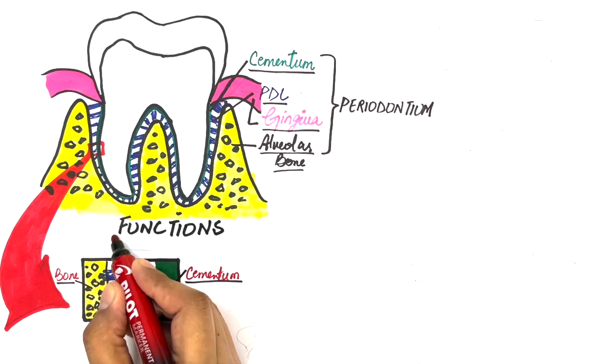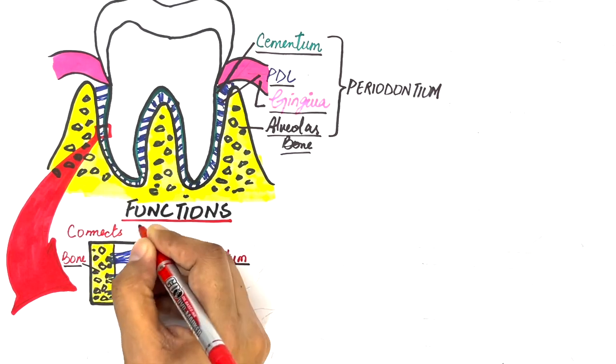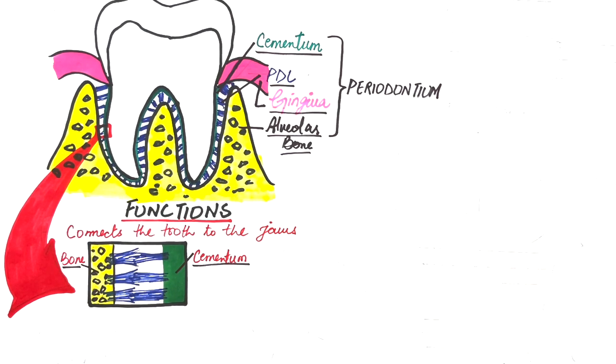The principal function of PDL is to connect the tooth to the jaw, which it must do in such a way that the tooth will withstand the considerable forces of mastication. This requirement is met by the masses of collagen fiber bundles that span the distance between the bone and the cementum.